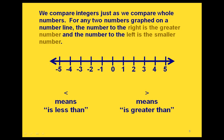If we have two integers that we want to compare — for example, 3 and negative 2 — we're going to fill a blank in with either a less than or a greater than symbol. Let's graph the two integers on our number line: there's 3, and there's negative 2. Since negative 2 is on the left, it is less than 3. Or the other way: 3 is greater than negative 2. If we had negative 2 coming first in the expression, we'd say negative 2 is less than 3.